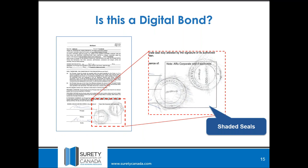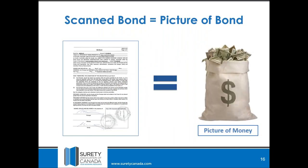This is a mechanically sealed document — like in the old days. We shade it to make sure the seal shows up. That's not what we call an e-bond. A very wise man, Steve Ness, once told me: 'You give me a picture of a bond, I will give you back a picture of money,' which means that a scanned or non-verifiable document is not a valid bond from the e-bonding perspective.